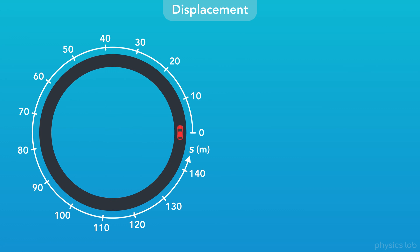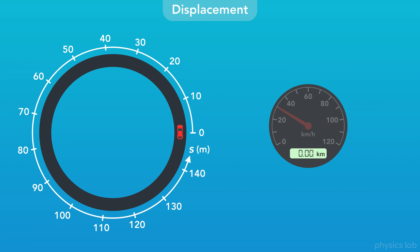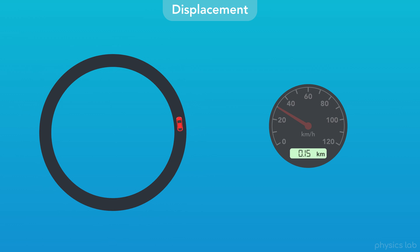Like with linear motion, the odometer in the car would show us our displacement along the circular road. The odometer doesn't know whether we're driving on a straight road or a curved road — it just measures the distance the car travels along whatever path it takes. Even though this track is only 150.8 meters long, the position and displacement numbers don't reset back to zero when the car keeps driving around — they keep going up.